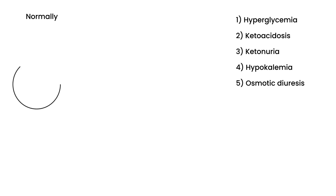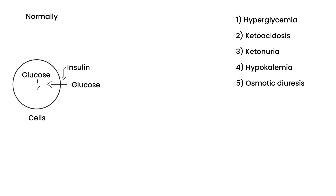Normally, what happens is the body has a mechanism of getting glucose inside the cells. Our peripheral cells require insulin to get glucose into them — insulin into cells. Once the glucose goes inside the cells, there are a series of chemical reactions that produce ATP, which is used as energy. So glucose is essentially a form of energy that the cells use.